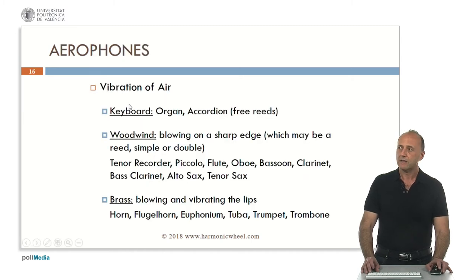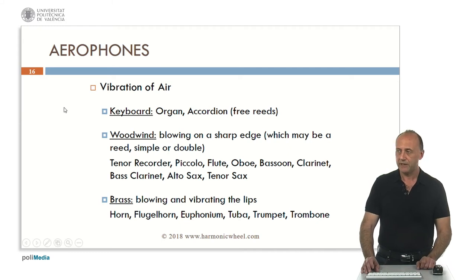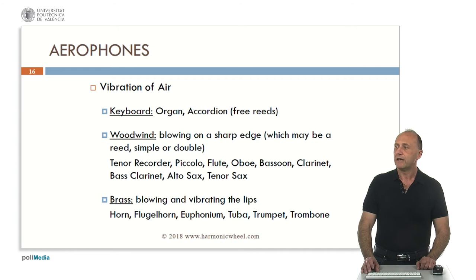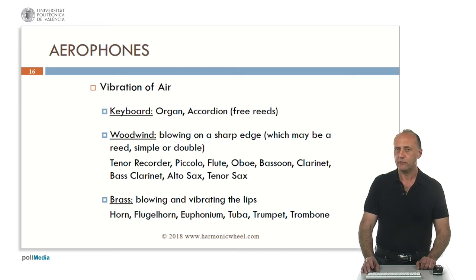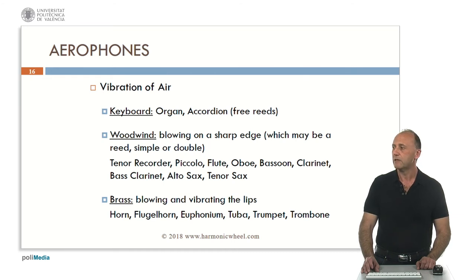Now let's analyze the aerophones. In this case the sound is produced by the vibration of air. They can be keyboard instruments such as the organ or the accordion, woodwind, or brass instruments. In the woodwind instruments the sound is produced by blowing on a sharp edge, which may be a reed — either simple or double. In the case of brass instruments, the sound is produced by blowing and vibrating the lips.